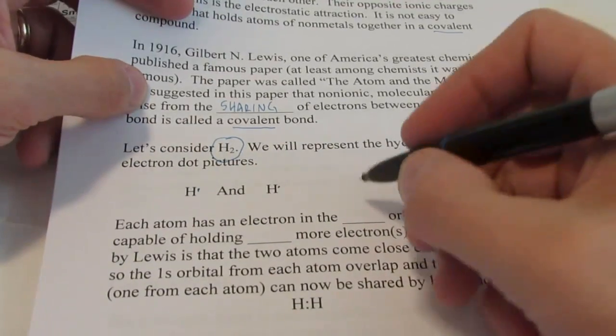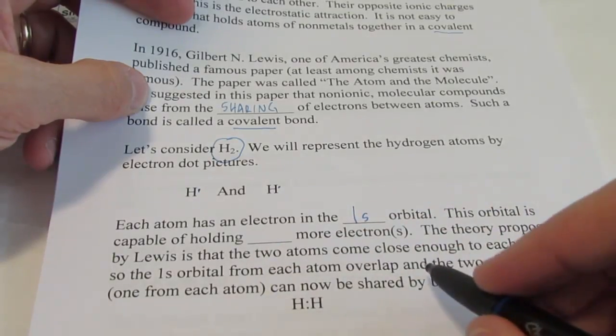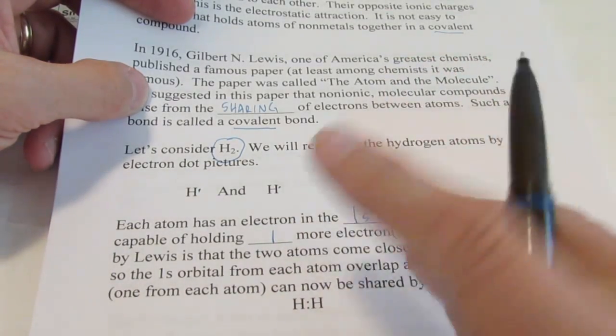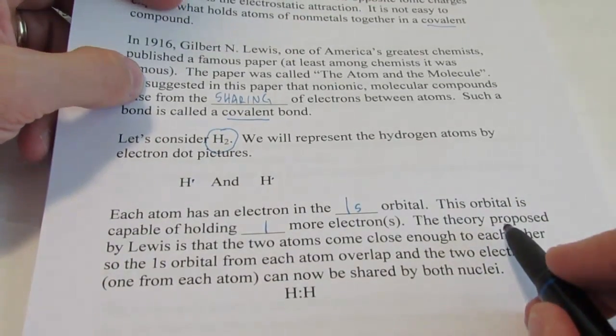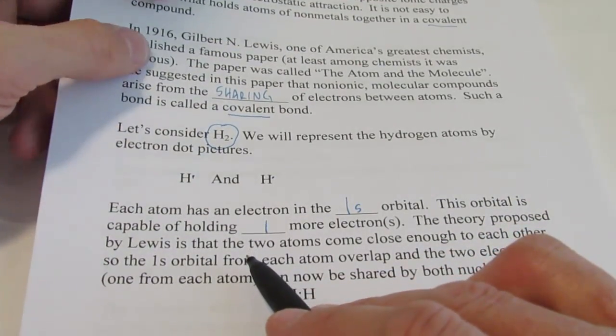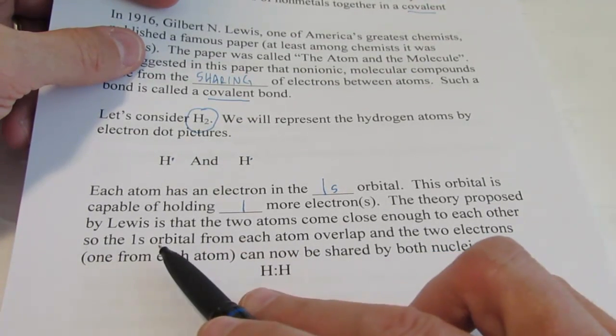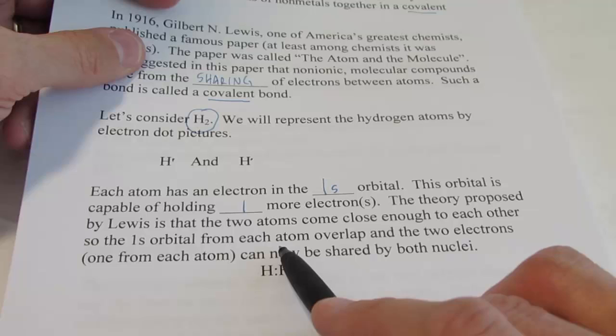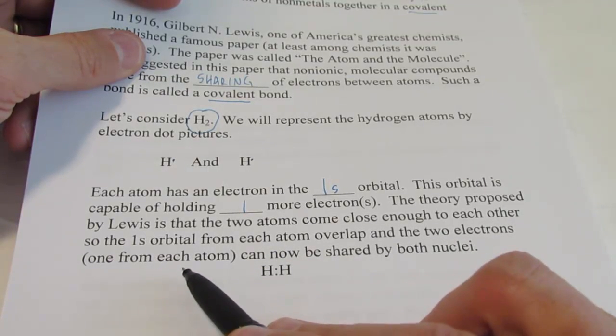We will represent the hydrogen atoms by their electron dot pictures. Remember how to draw electron dot pictures. Each hydrogen has one dot. Each atom has an electron in the 1s orbital. This orbital is capable of holding one more electron for a total of two in the 1s orbital.